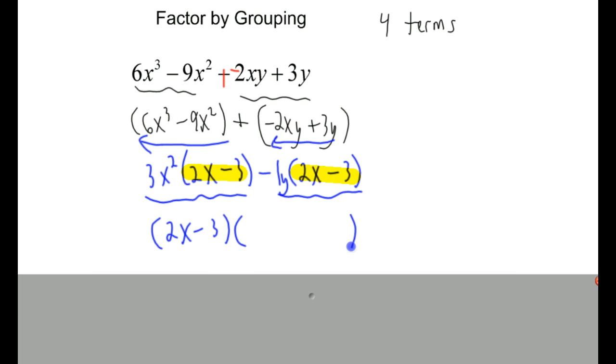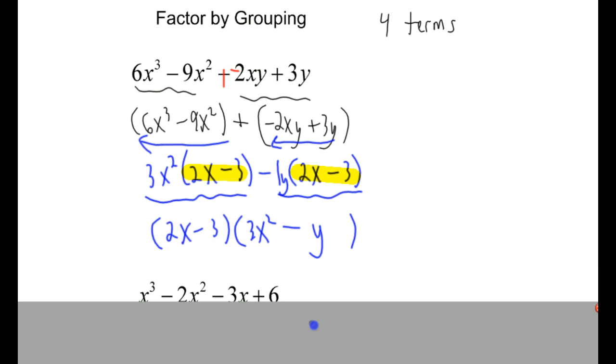What's left over, the minus sign in between will be put here. So we have 3x squared and minus y. See, now this is factored. So we took four terms and factored. Let's try one more.